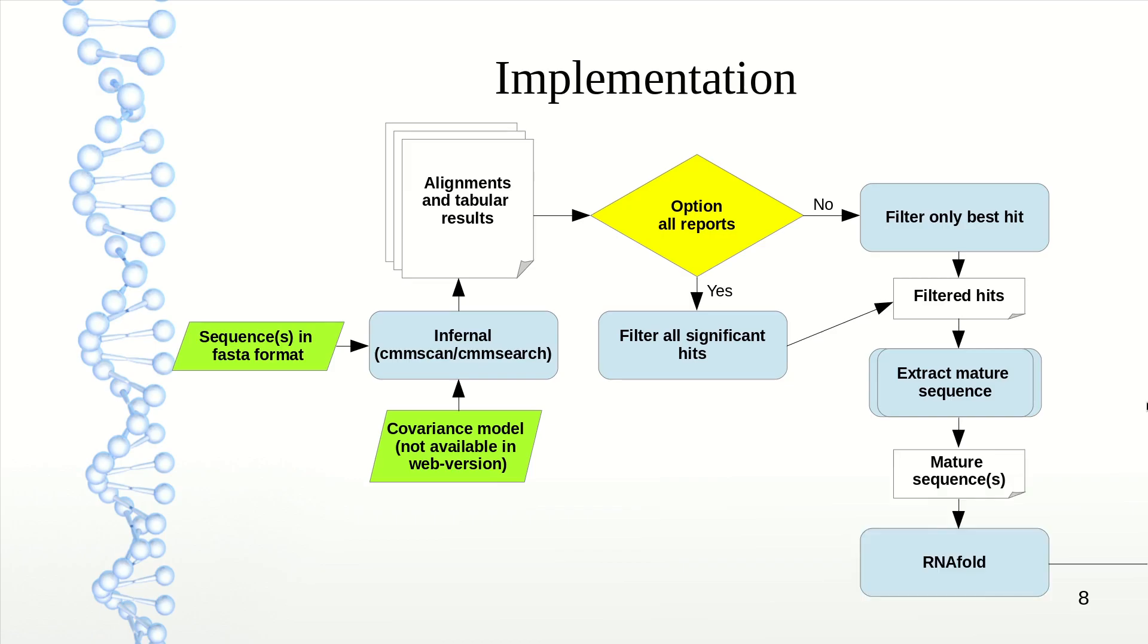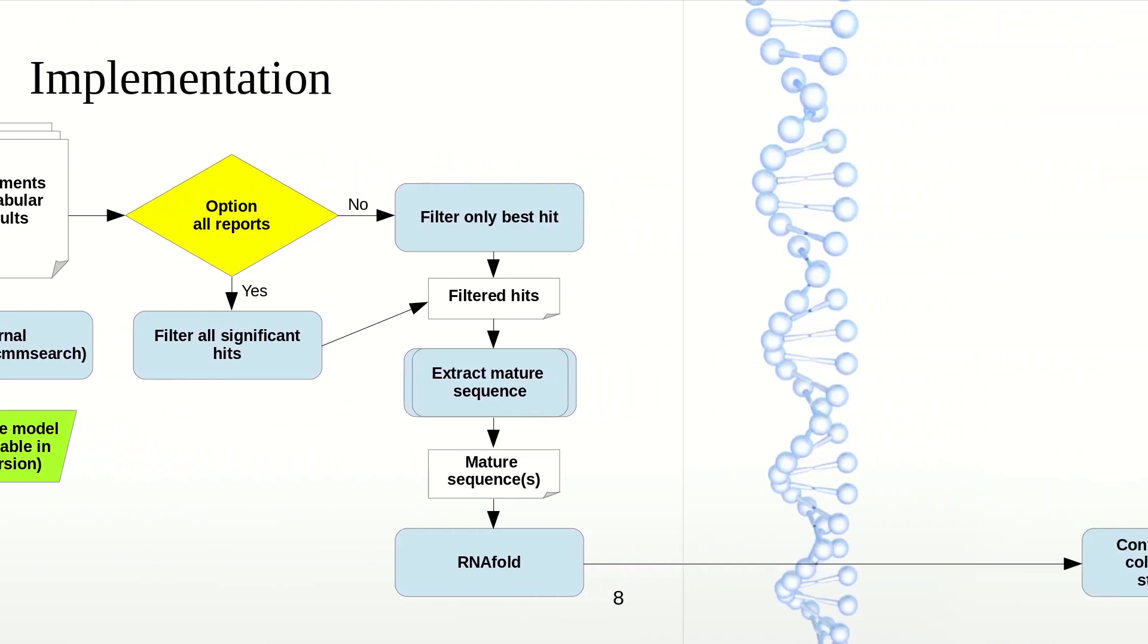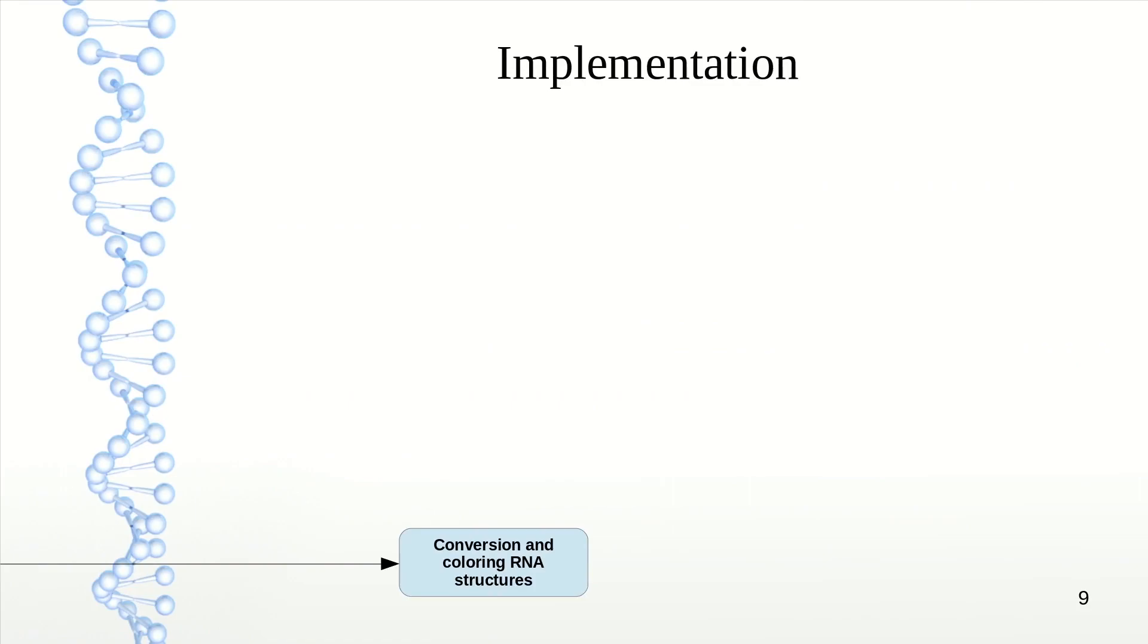These filtered hits return a mature sequence, meaning it looks in your provided sequence for the region that corresponds best with the covariance model. This mature sequence is then provided to RNA fold, which determines the structure. The structure can then be converted and colored, resulting in DBN files and PNG images.